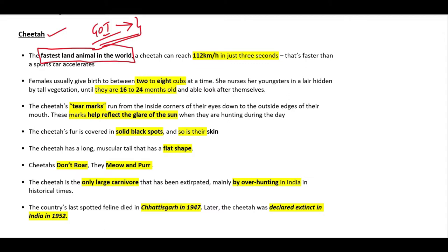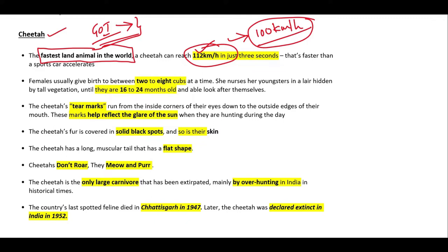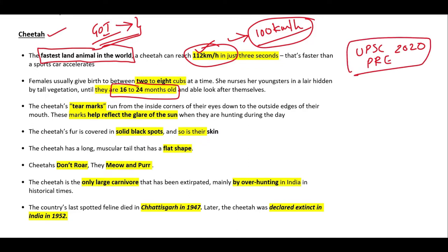Cheetah is the fastest animal in the world and it can run at speeds more than 100 kilometers per hour. You just have to remember that it can run at speeds higher than 100 km/h. Cheetahs take care of their young ones for up to two years. This data is important because in the UPSC 2020 prelims examination there was a similar type of question on elephants, and knowing such data helps eliminate wrong options.